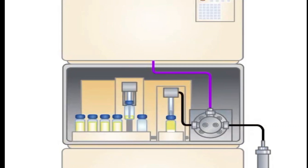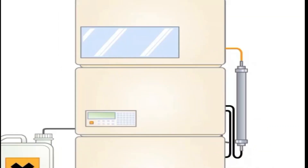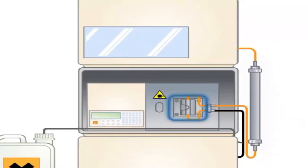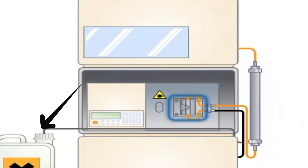The sample, diluted by the mobile phase, is then delivered to the HPLC column, where the components of the sample are separated. The components are then analyzed by the detector, and either saved in fractions for later use or transferred to a waste bottle.